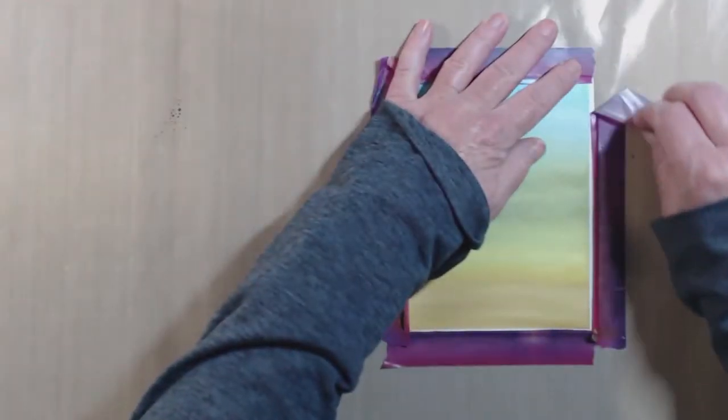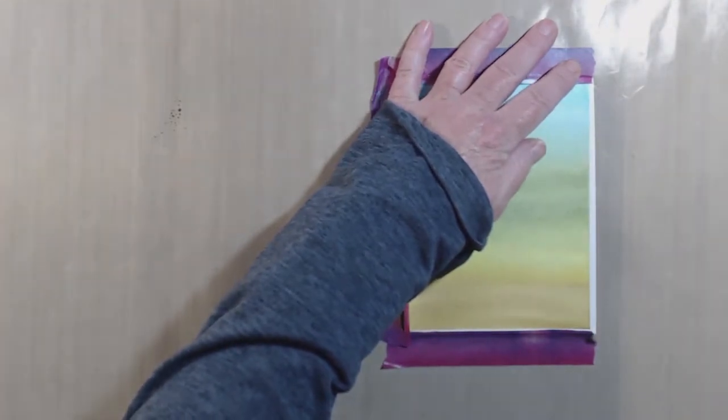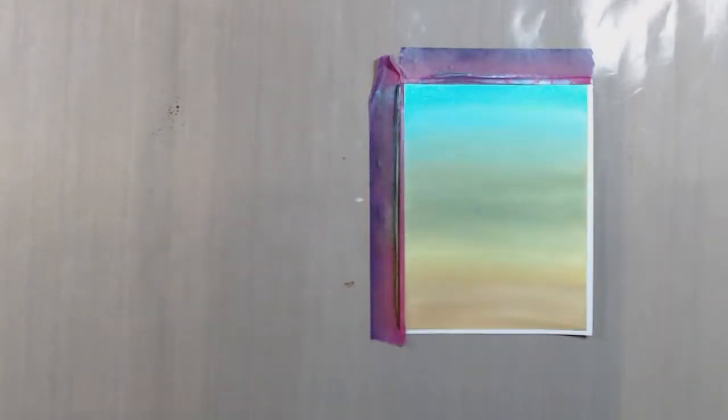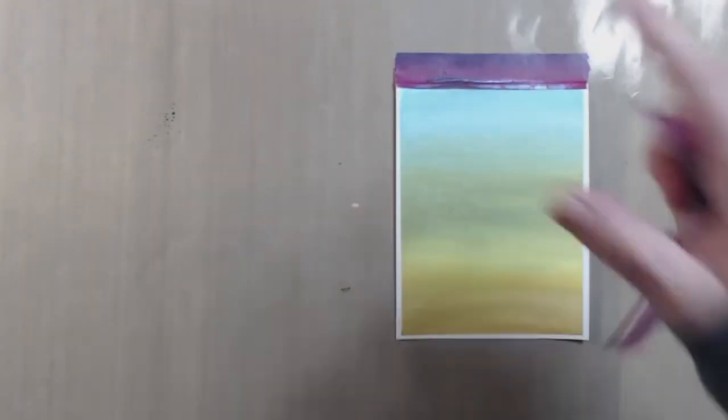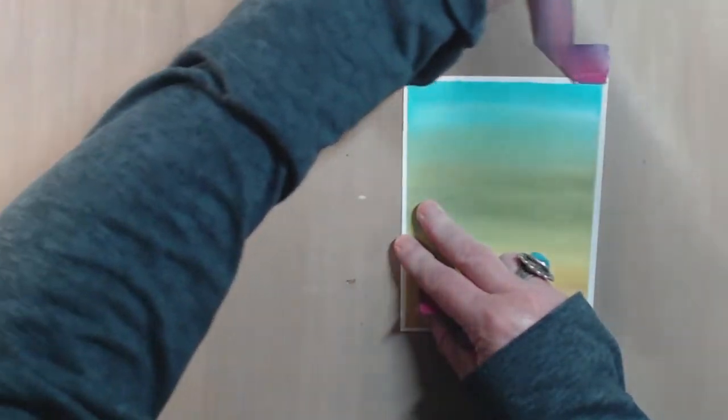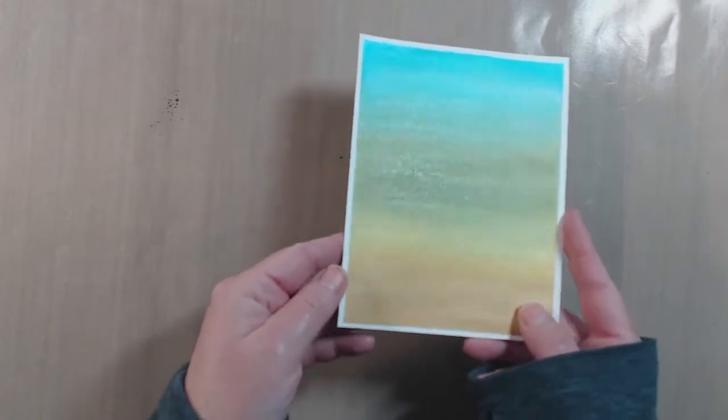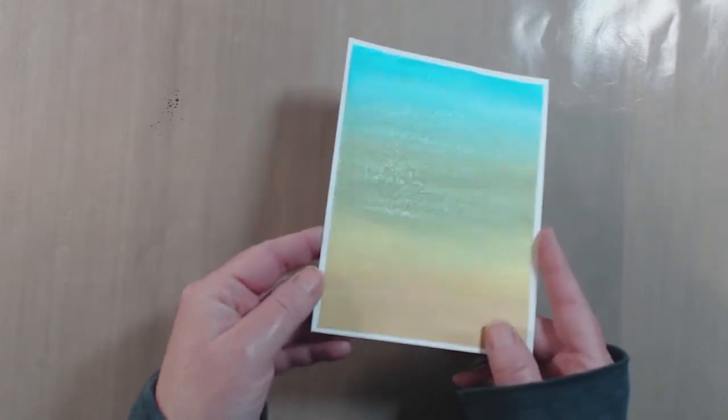I let this dry overnight and now I'm removing the washi tape from the edges. You want to do this fairly slowly and at an angle because if you're not careful you can pull up some of the paper and mess up the watercoloring that you've done. It stays pretty flat if you tape it and you haven't put too much water on it which is going to help me when I'm adhering this down later.